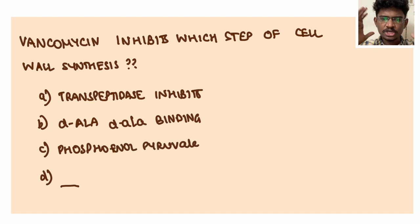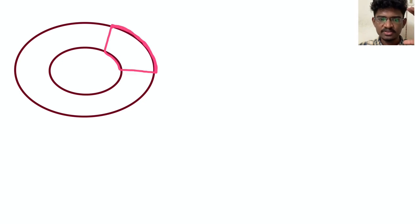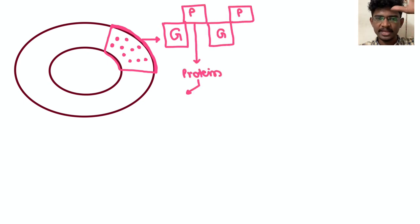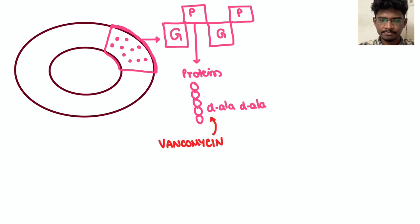As we know, bacterial cell walls are composed of peptidoglycans - glycans are glucose moiety which is the NAG and NAM, N-acetyl glucosamine and N-acetyl muramic acid. These are glucose particles with the peptide chains. In this peptide chain, if you see in the last there will be two amino acids: D-alanine-D-alanine.